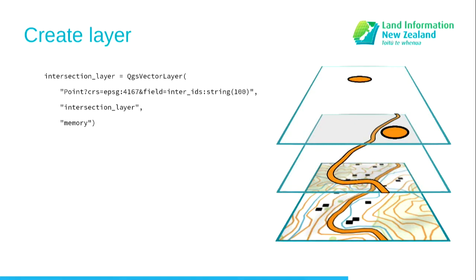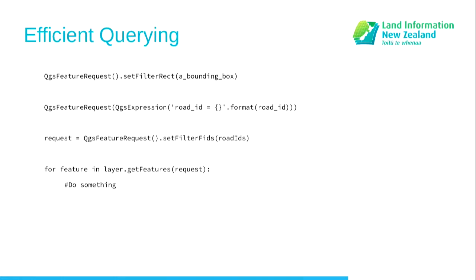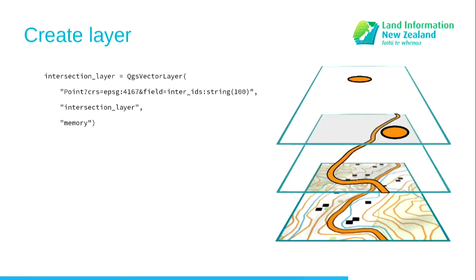Creating a layer — this is a simple memory layer. It sets up a QgsVectorLayer. There are two types of data, vector versus raster, and this is a QgsVectorLayer making a point. It's got a coordinate reference system — how it takes a globe ellipsoid and puts it on a flat plane. It's got a field called inter_ids which is a string, it's got a name, and it's going to be a memory layer. In the cookbook there's more, including using a writer to write directly to your hard drive.